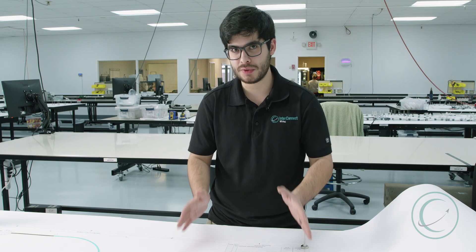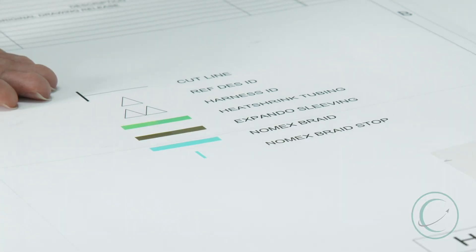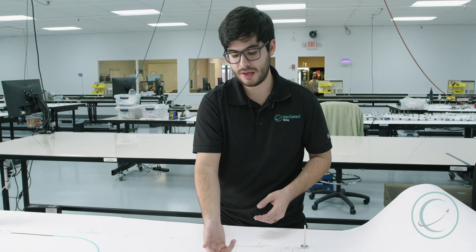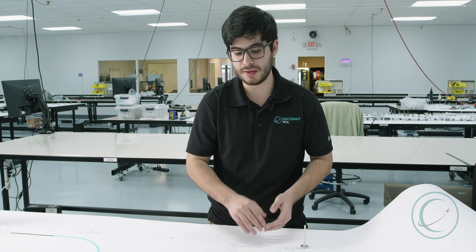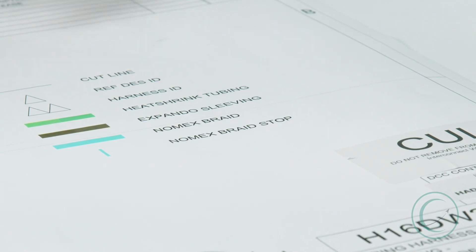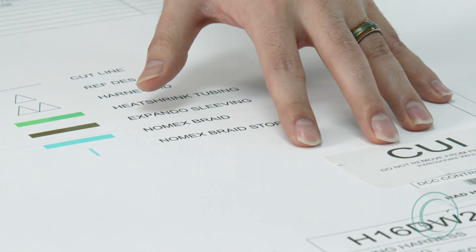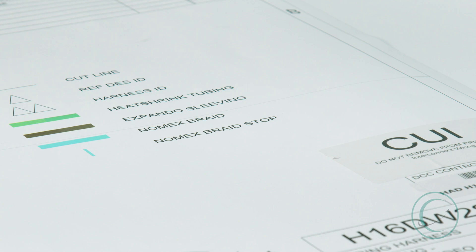And this section of the hat is where we really make it our own. We have our custom chart or legend that denotes our special colors that our assemblers understand, as well as our own symbols, including a cut line. One special piece to note is the CUI Controlled Unclassified Information sticker that denotes the importance of this document and how it should not be taken from these premises.